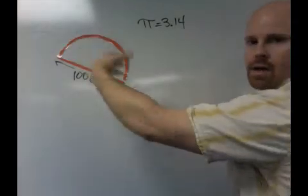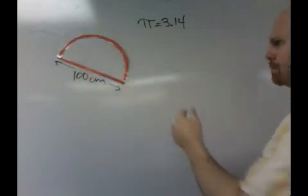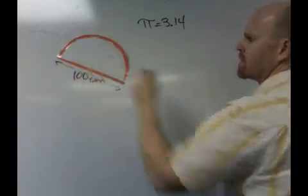All right, so now let's give another try. Here's another example, and we want to find the perimeter of this semicircle.